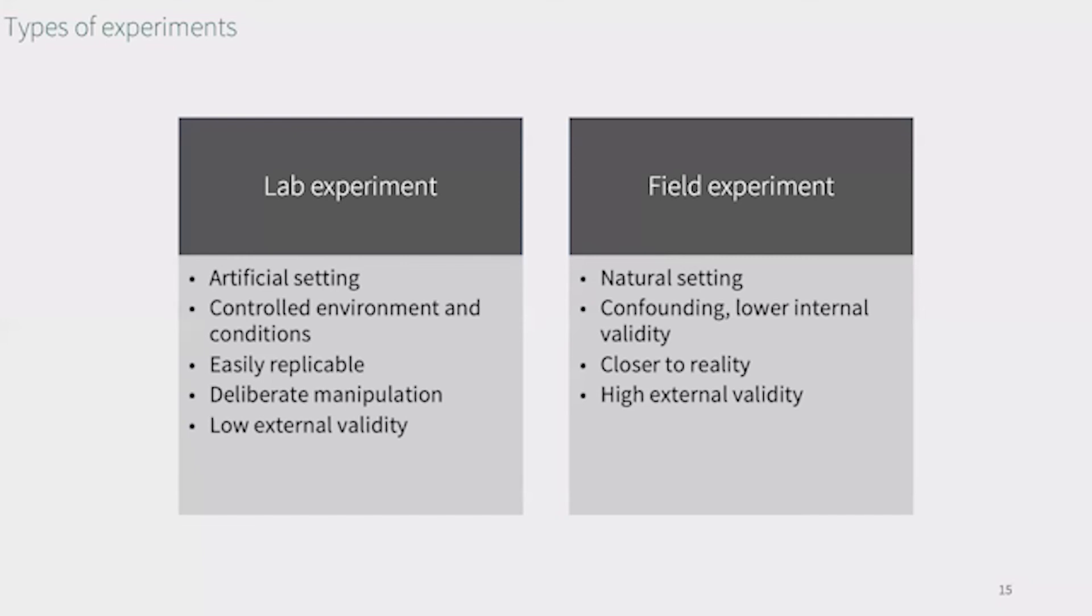Besides design, we can also distinguish different types of experiments. The two main types are the laboratory experiment and the field experiment. It can be viewed as a continuum, rather than opposites. In between, we can find lots of variants, like quasi-experiments or naturalistic experiments, but let's focus on the two main types for the moment. Lab experiments are characterized by an artificial setting, a controlled environment and conditions, deliberate manipulation of the stimulus, good replicability, but low external validity.